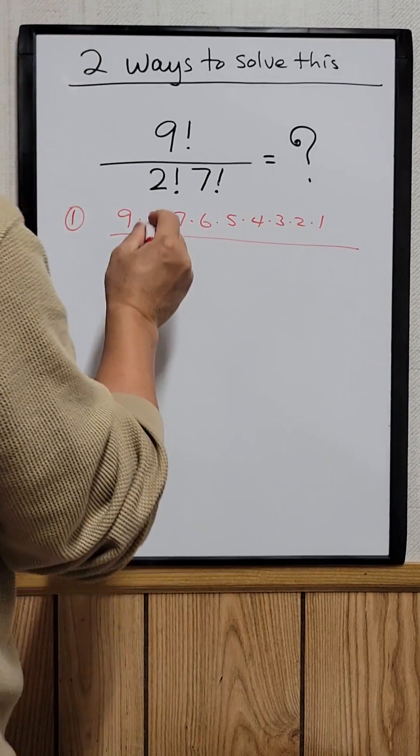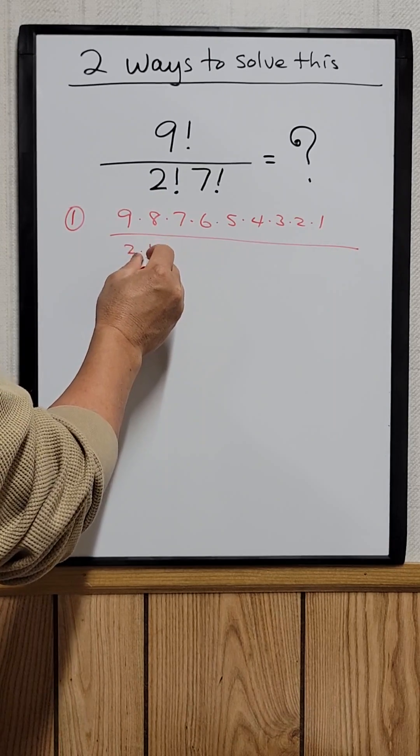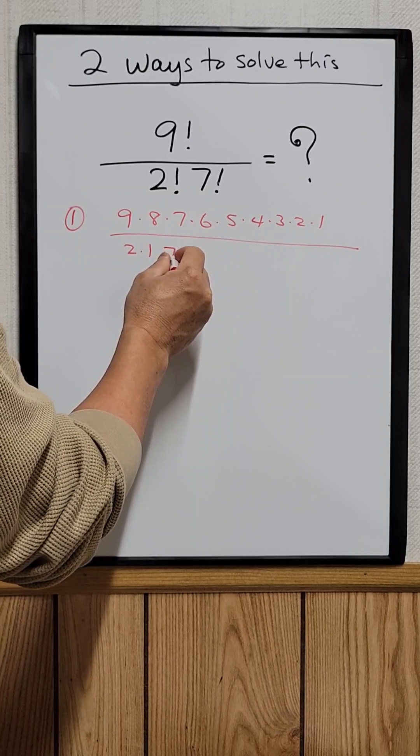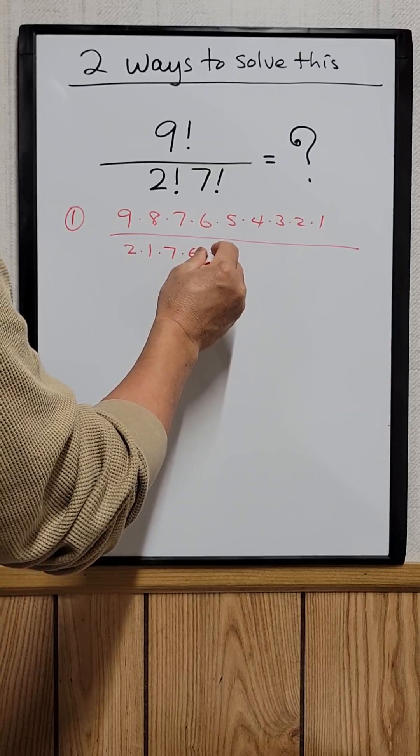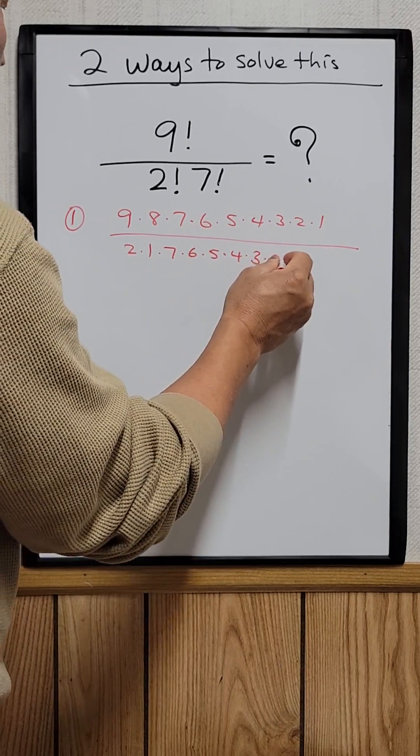And then two factorial just means two times one. And seven factorial is just seven times six times five times four times three times two times one.